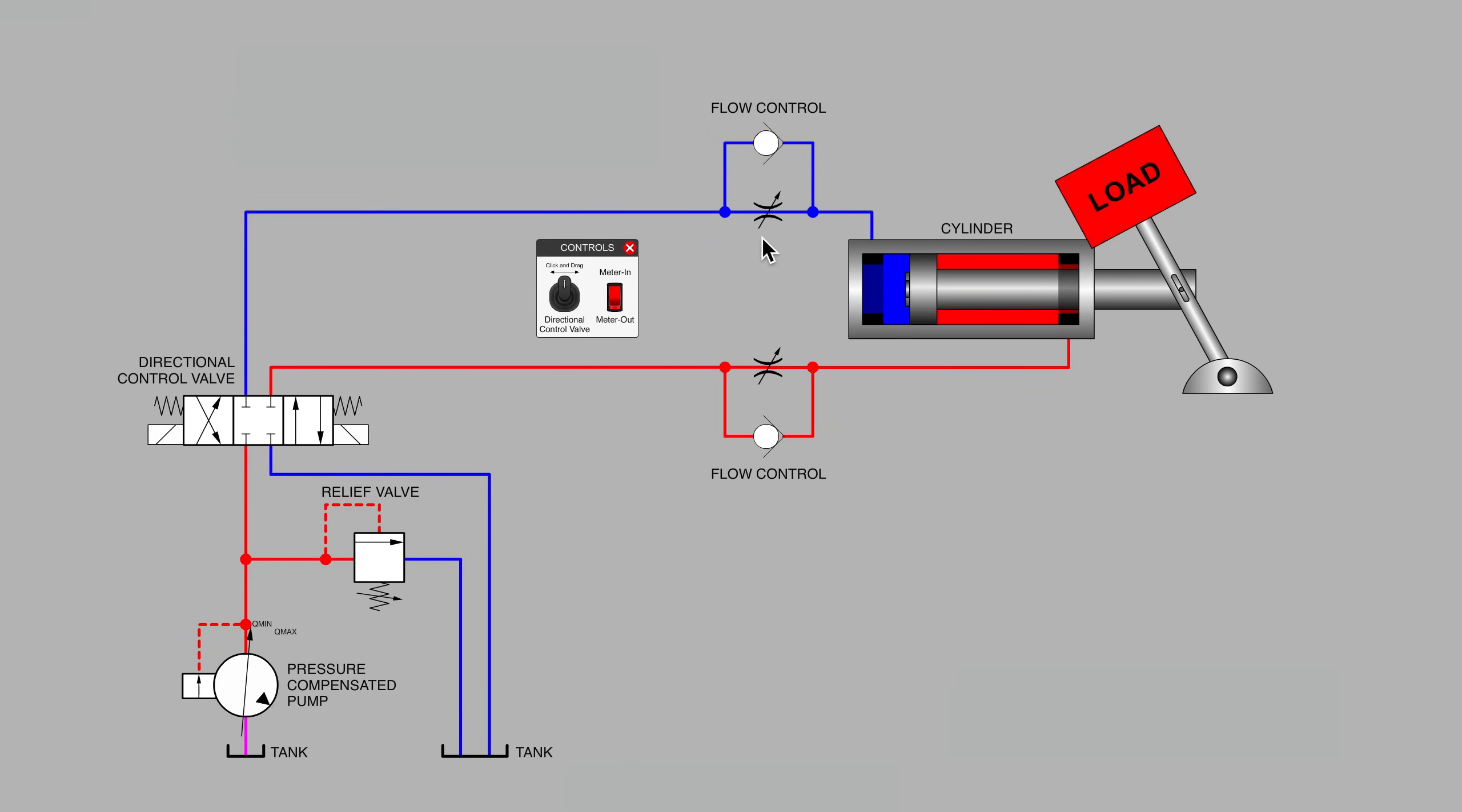At its most basic level, a flow control as used for controlling the speed of a hydraulic cylinder is often nothing more than a variable orifice in the form of a needle valve along with a return flow check valve. And the return flow check valve is usually built right into the same package as the needle valve.